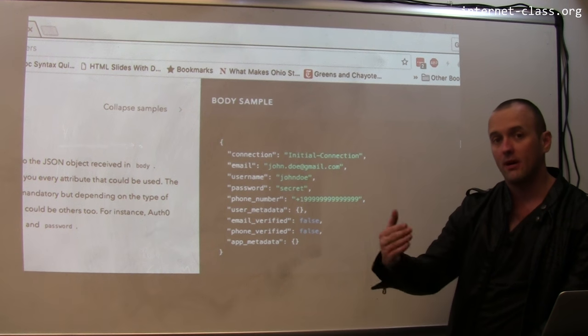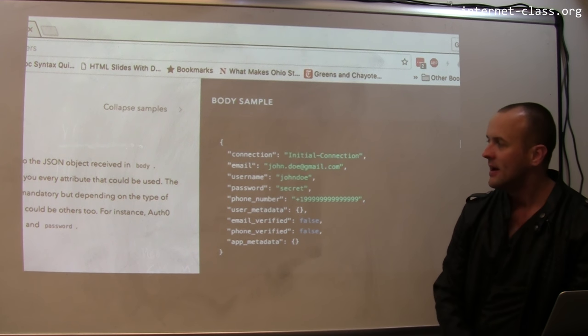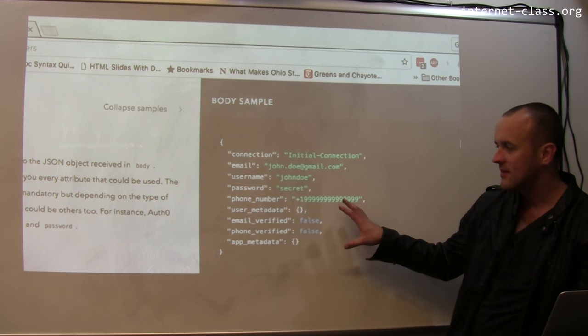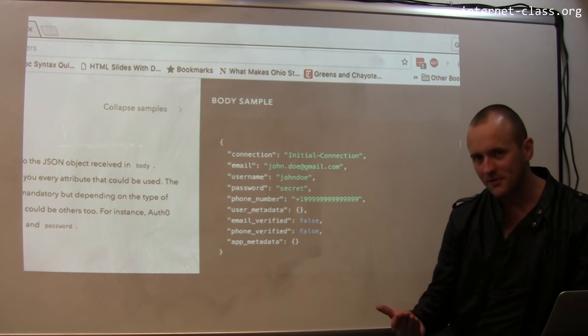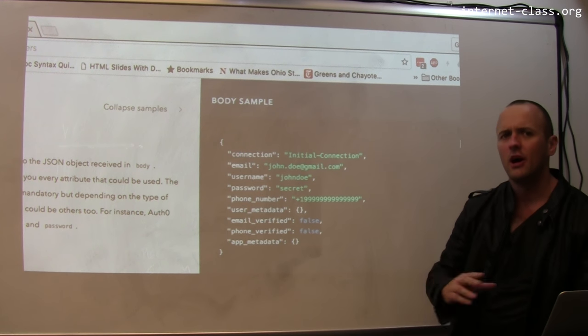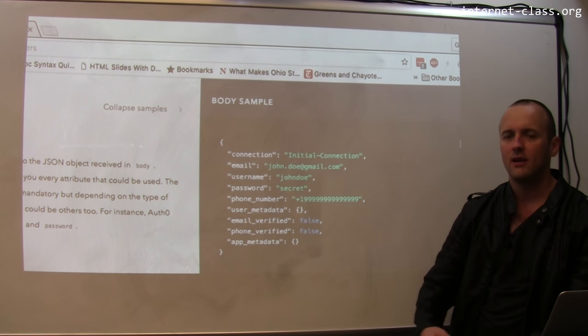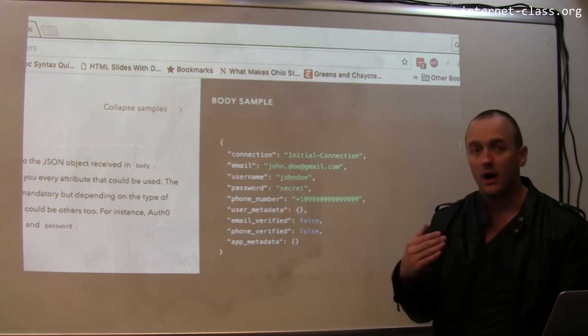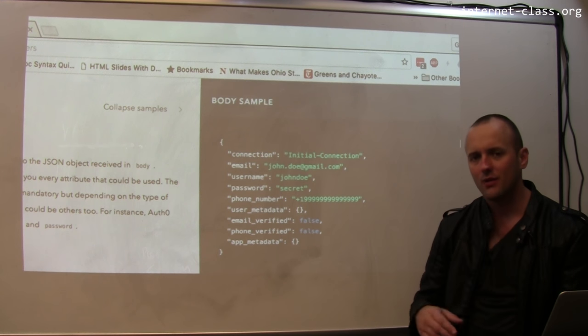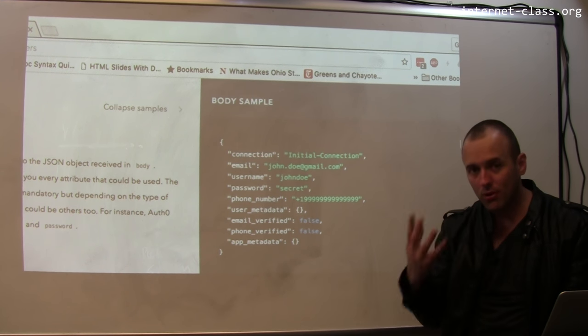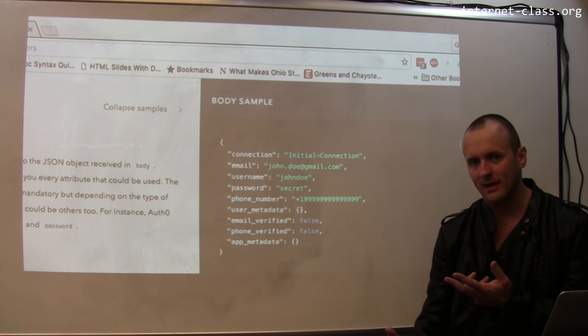So again, this is an example of a fairly complicated web interface. But you can use these. One of the exciting things about the world of computing today is so many services that we use have these interfaces. Google has them for all of their products. So again, you can programmatically interact with YouTube and all the other Google services, Google Drive and things like that, in really powerful ways. And so you can write programs against these public web interfaces that accomplish all sorts of really cool things in the cloud.